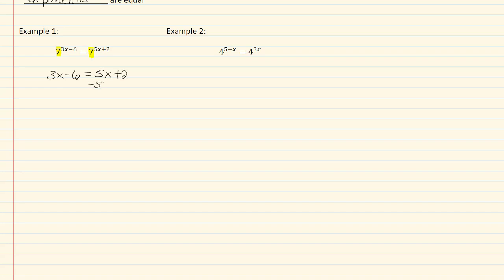So solving here, I'm going to subtract five x from both sides. I get negative two x minus six equal to two, add six to both sides. I get negative two x equal to eight, divide by negative two and I get x is equal to negative four. And that's my solution to this exponential equation.